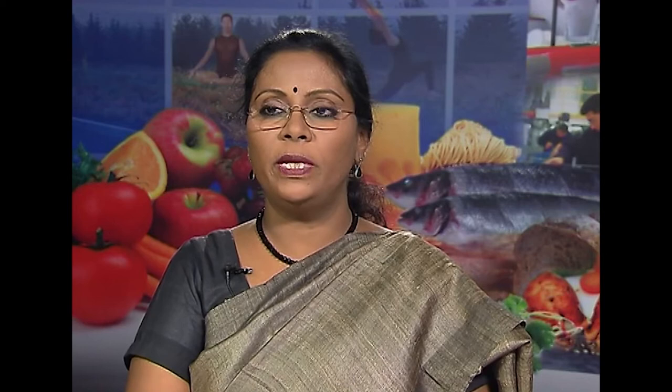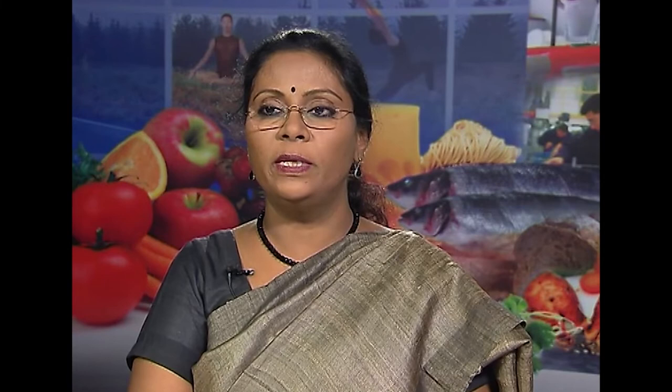Prolamines are also known as gliadins. The proportion of these proteins differs in different cereals. The gliadins and glutelins are known as gluten proteins. Gluten protein, formed by the combination of gliadins and glutelins, has unique elasticity and flow properties which are used for baking bread and other products. The protein content of cereals varies from 6 to 12 percent and this protein is deficient in the essential amino acid lysine. More than 50 percent of protein requirement is provided by cereals because we consume large quantities in our daily diet.